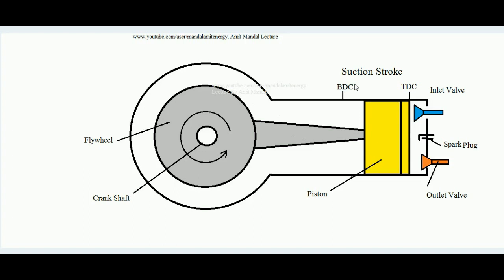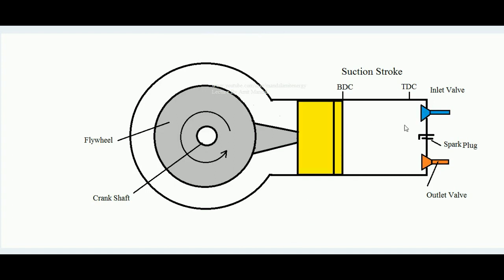The first stroke of a four-stroke SI engine is the suction stroke. At the beginning, the piston is at TDC — top dead center — the inlet valve opens, and the piston moves toward the bottom dead center. The entire cylinder fills up with charge. Ideally, the suction stroke starts at TDC and ends at BDC.